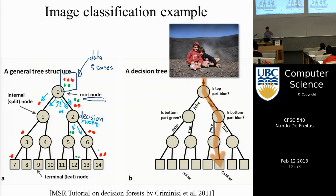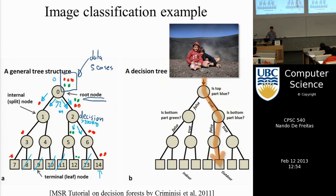Assuming you had a tree, you would be splitting cases. Some leaves would be empty, but for leaves that contain cases of one class, if you had a new test point you don't know the label of, you would follow the same decisions. If the test point ends up in a red leaf, it's classified as red; if it ends up in a green leaf, it's assigned the class green.